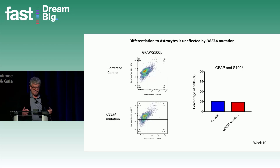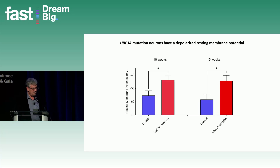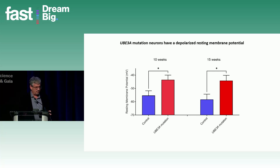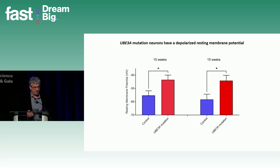With the same cell types and cellular composition confirmed, we use electrophysiology to look at differences in neuronal activity and synaptic activity, comparing corrected control neurons with neurons that have just the UBE3A mutation. One of the phenotypes we see — also found in AS deletion neurons — is a depolarized resting membrane potential, meaning the neurons are a little more immature and hyperexcitable. We see a very similar phenotype in these UBE3A mutation neurons as in the full AS deletion neurons.